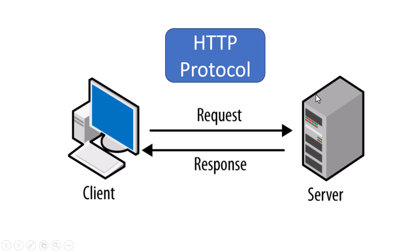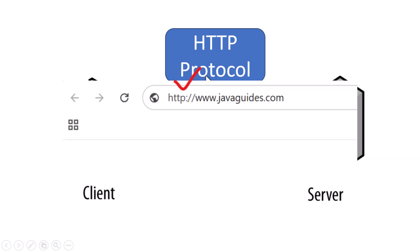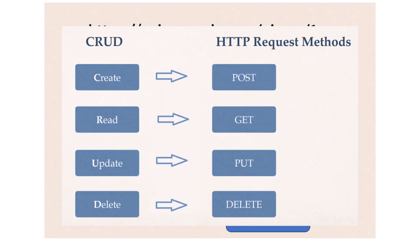Behind the scenes, a REST API uses something called the HTTP protocol, which is the same system your browser uses when you visit websites. There are four main types of actions that a REST API can perform, and these actions are based on HTTP methods.